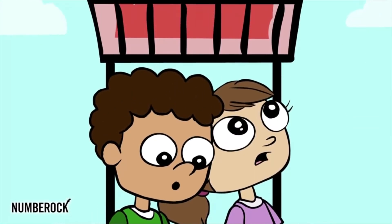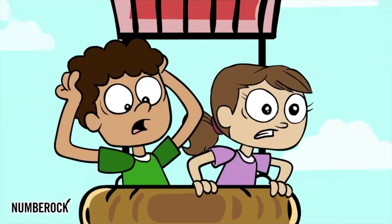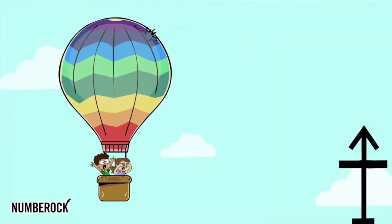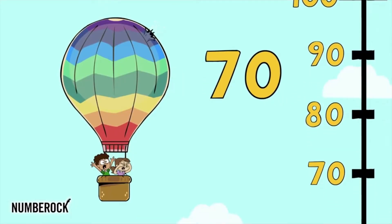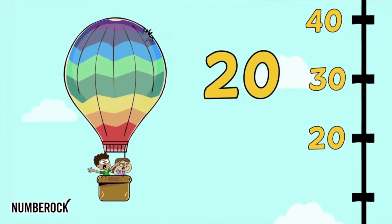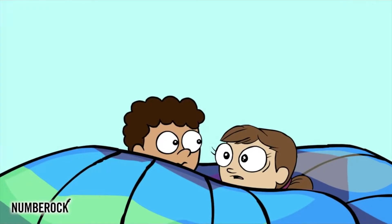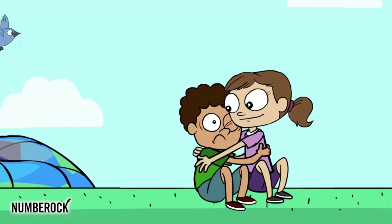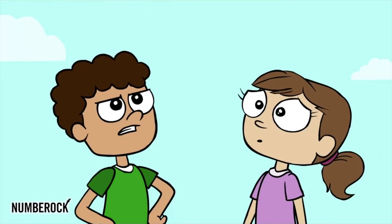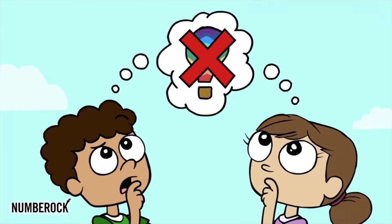We're in a hot air balloon and we're about to descend, counting how much longer we go in groups of 10. Counting backwards: 100, 90, 80, 70, 60, 50, 40, 30, 20, and then 10. Phew, we're alive! I could tell that ride would really scare my friend.